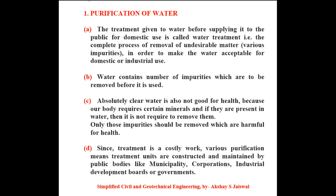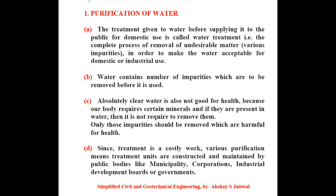Point A: The treatment given to the water before supplying it to the public for domestic use is called water treatment — that is, the complete process of removal of various impurities in order to make the water acceptable for domestic or industrial use. Point B: Water contains a number of impurities which are to be removed before it is used. Point C: Absolutely clear water is not good for our health because our body requires certain minerals, and if they are present in water then it is not required to remove them. Only those impurities should be removed which are harmful for health.